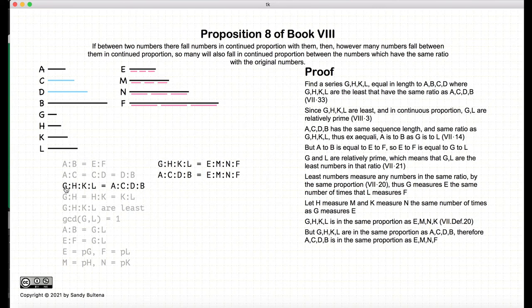We have that a, c, d, b was equal to g, h, k, l. We have that g, h, k, l is equal to e, m and f. So consequently, a, c, d, b is equal to e, m and f.